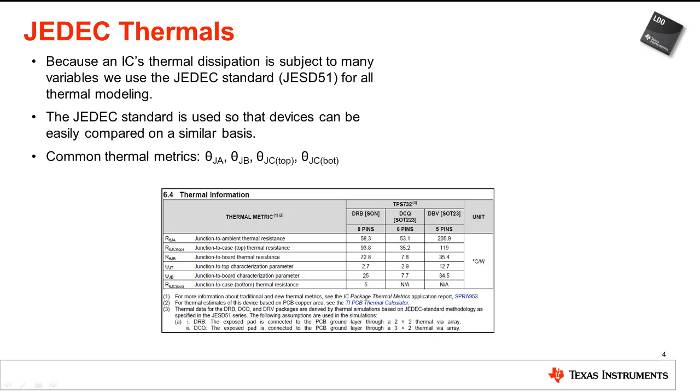As part of the JESD51 standard, we give five thermal metrics: theta JA, theta JC top, theta JB, psi JT, psi JB, and theta JC bottom. The most commonly used of these metrics is theta JA, which is used to calculate the junction temperature based on the ambient temperature.